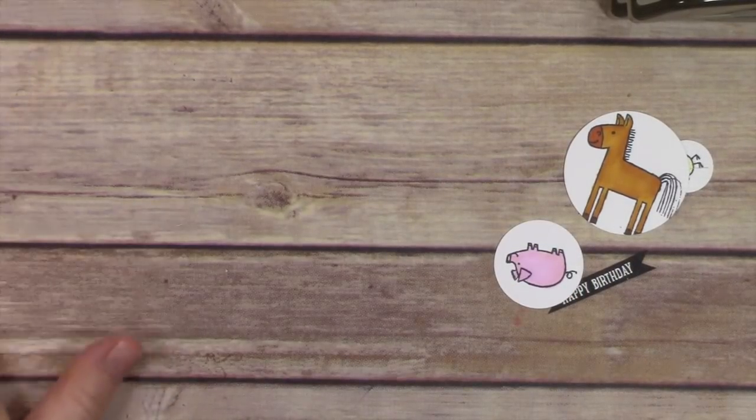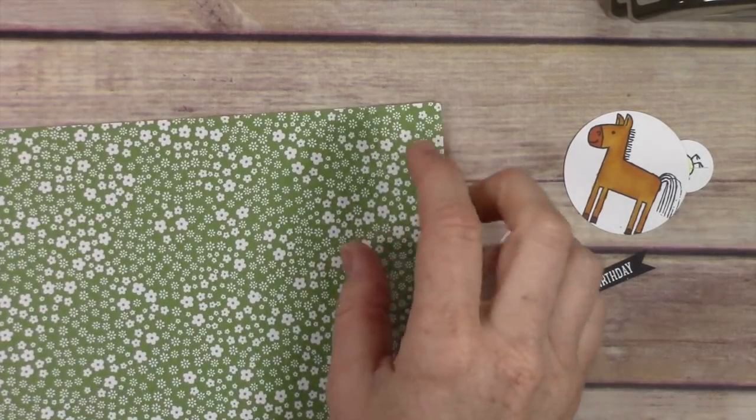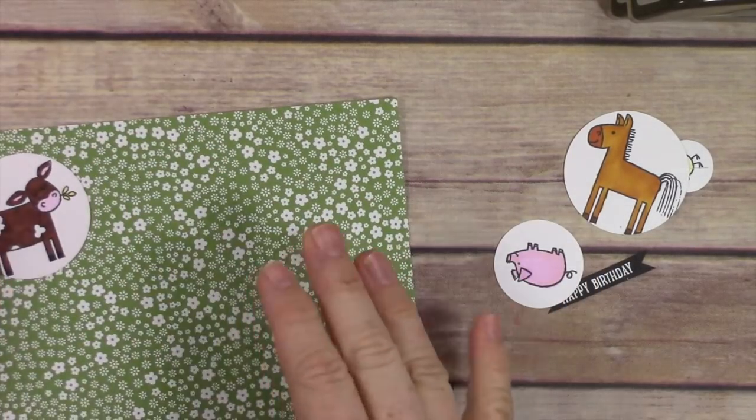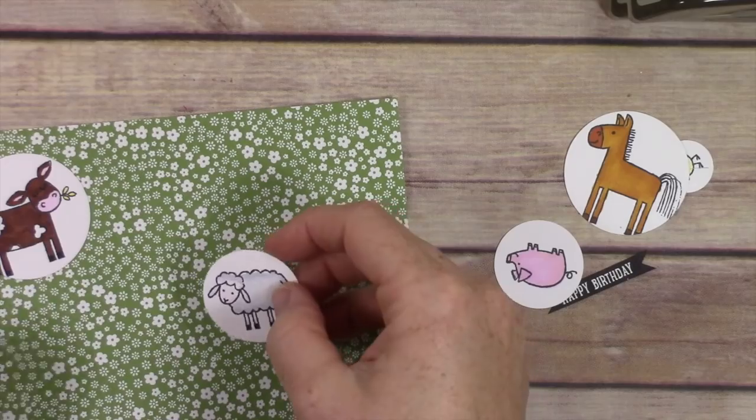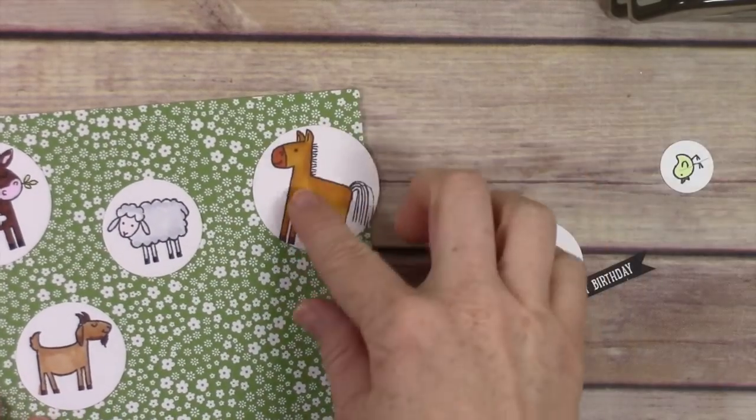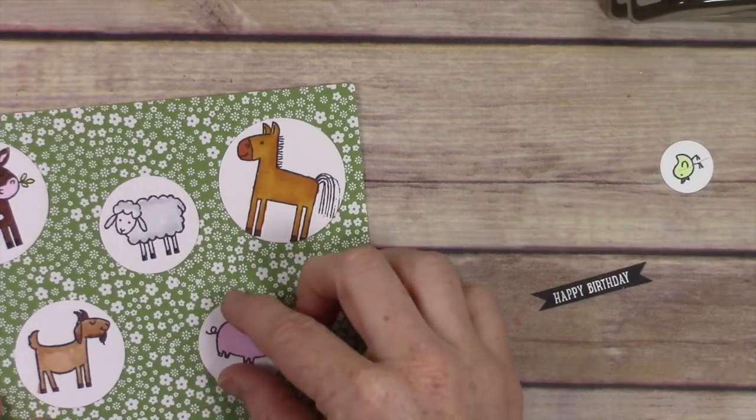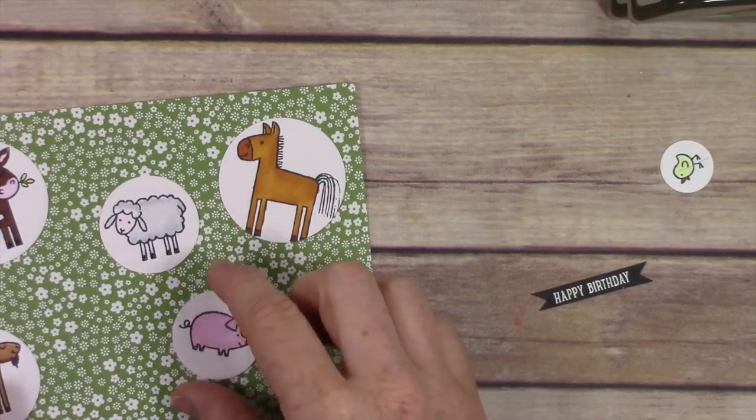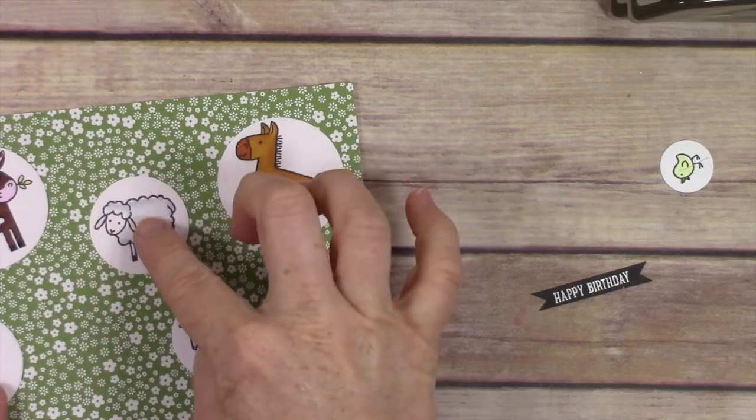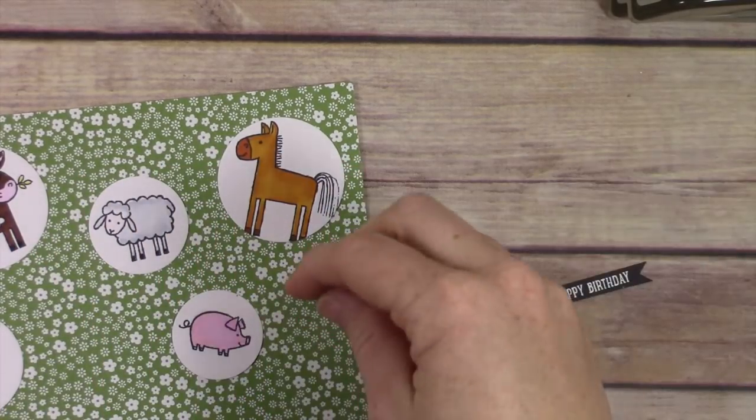I have a bunch of embossing powder on my table that I spilled, so that's why you keep seeing me move stuff and wipe. Now I'm going to arrange all of my animals again the way that I want them and just kind of eyeball where I want all of them.